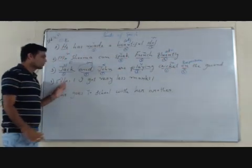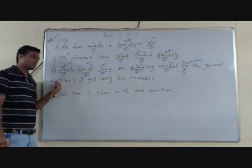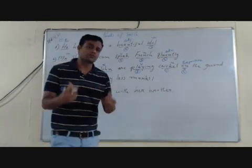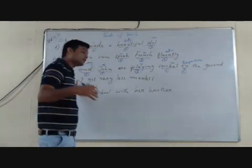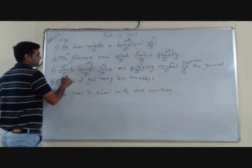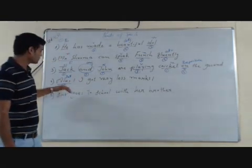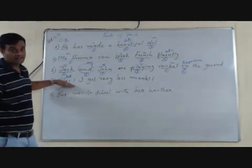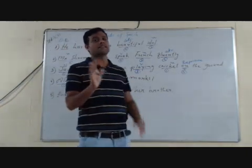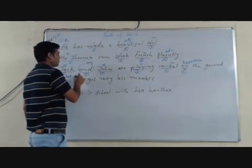Let's move to the fourth sentence: Alas, I got very less marks. The very first word 'alas' shows expression — it shows feelings. A word that shows feelings is the part of speech called an interjection — the last and eighth part of speech. So 'alas' is an interjection. Then 'I' — we use it for replacing the name of a person, so it is a pronoun.